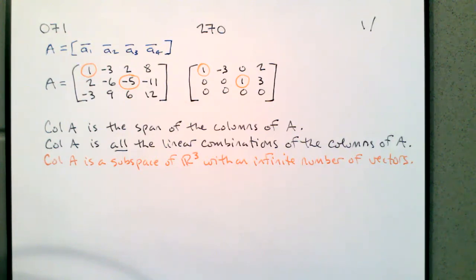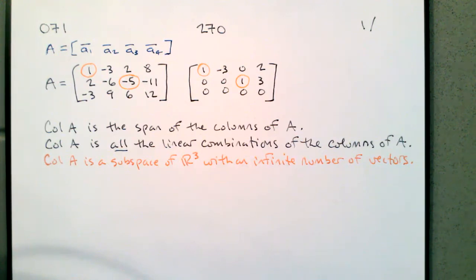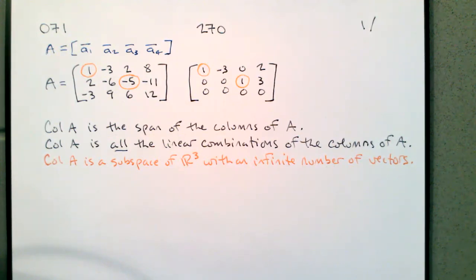Similarly for columns — note that A is a matrix, and the columns of A are a set of vectors. So the columns of A do not span R3 because A does not have a pivot in every row. The columns of A, as a set of vectors, is what spans R3 or doesn't span R3. The matrix is the thing that has the pivots. We need to recognize the difference between the columns of A and the matrix A.